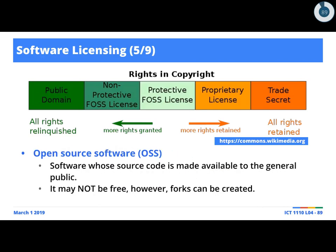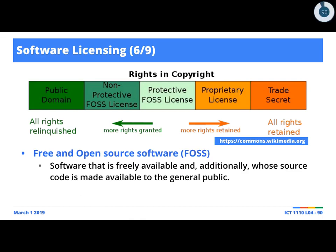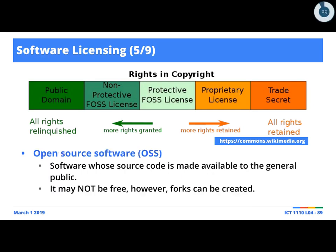Sometimes though, software might be open source but people will not allow you to make derivations — it might not be free. It might be open source but you're not allowed to make certain modifications like forks, which is why you have free and open source software. So open source and free and open source software sit at different positions on that licensing spectrum.